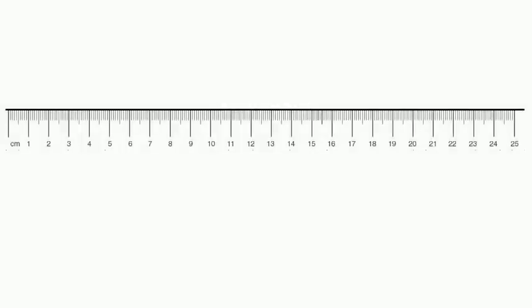Now your ruler is going to be an important feature here because on the regents you don't actually get a physical ruler, you've got to use the edge of the reference table. You're going to need the ruler for gradient, to measure distances on a topographic map, to measure eccentricity with your orbit of a planet, or whatever it may be. It's going to be an important feature, so we'll take a few seconds here to go over it.